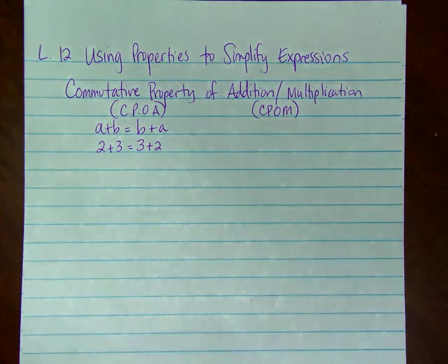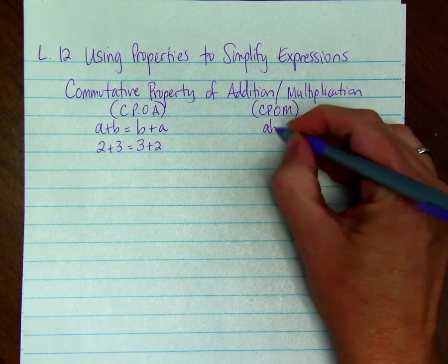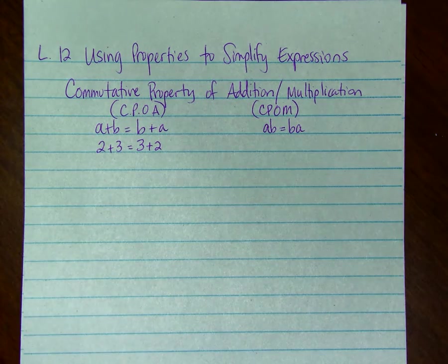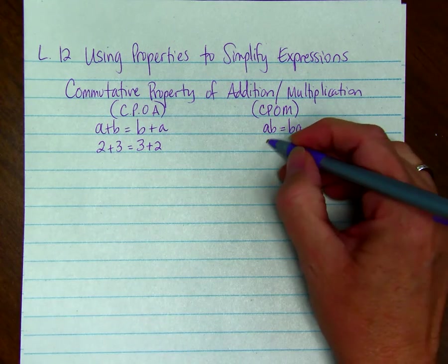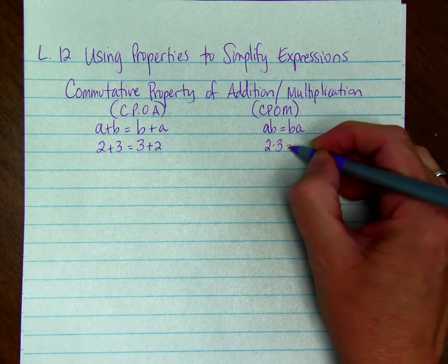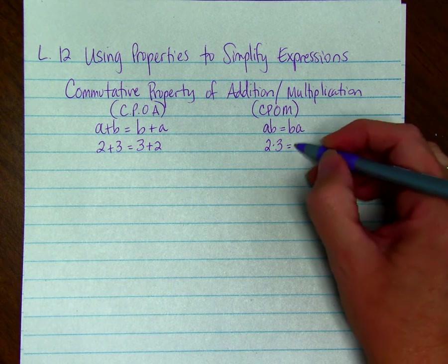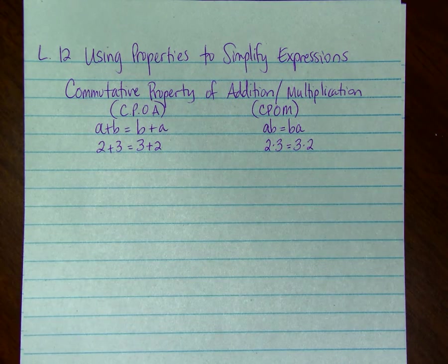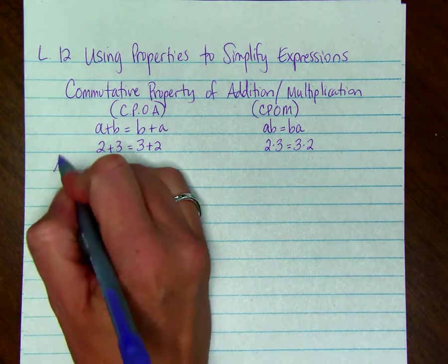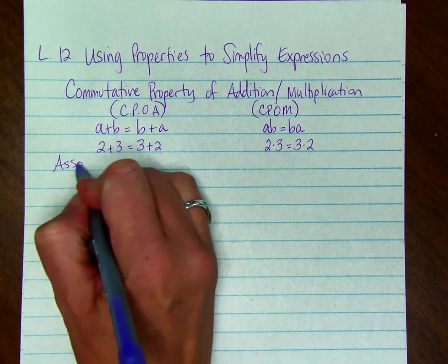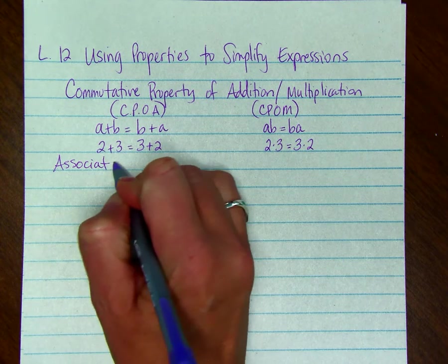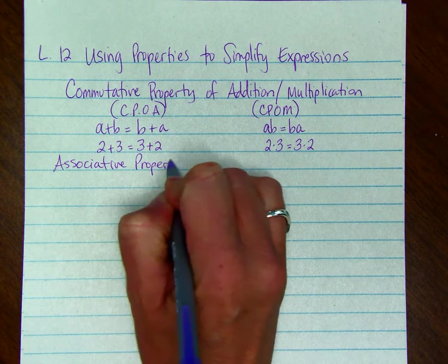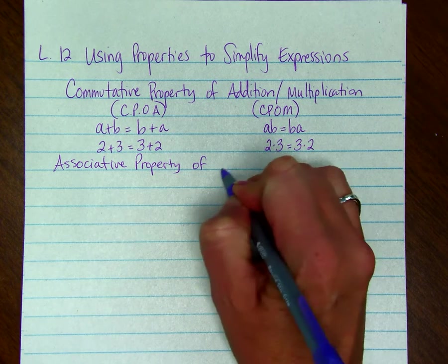The commutative property of multiplication is that A times B equals B times A. So again, if A is 2 and B is 3, then we can say that 2 times 3 equals 3 times 2. We also have the associative property of addition and multiplication.